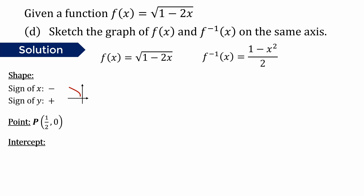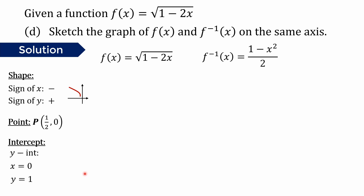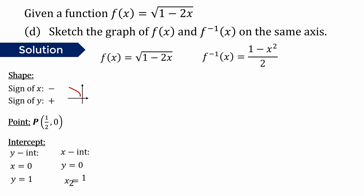We find the intercepts. For the y-intercept, when x equals 0: y equals the square root of 1 minus 2 times 0, which equals the square root of 1, which equals 1. For the x-intercept, when y equals 0: the square root of 1 minus 2x equals 0, so 1 minus 2x equals 0, giving 2x equals 1, so x equals 1/2.